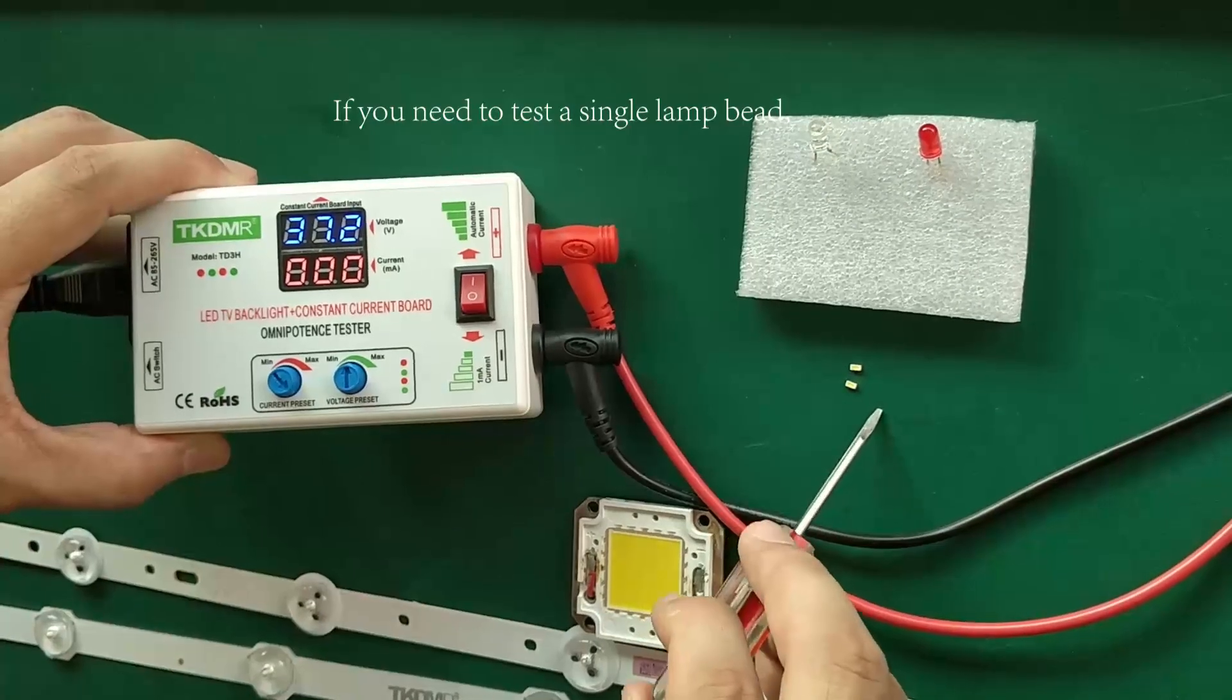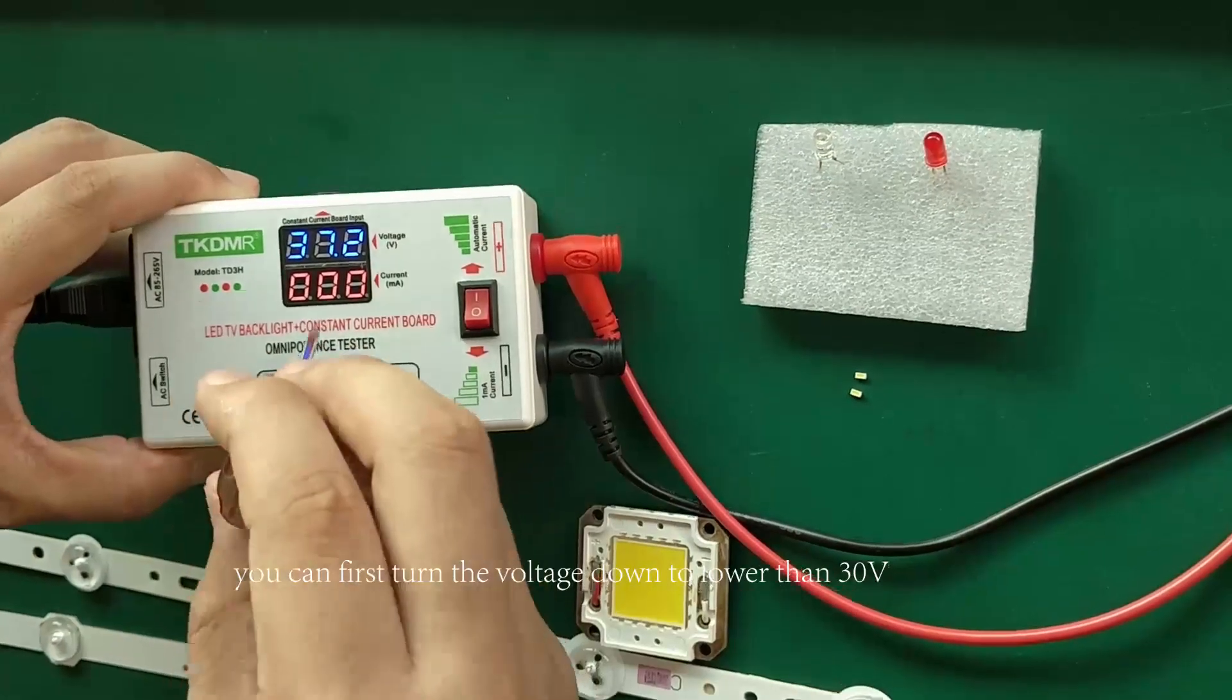If you need to test a single ampere, you can first turn the voltage down to lower than 30 and the current switch to the position of 1 milliampere.